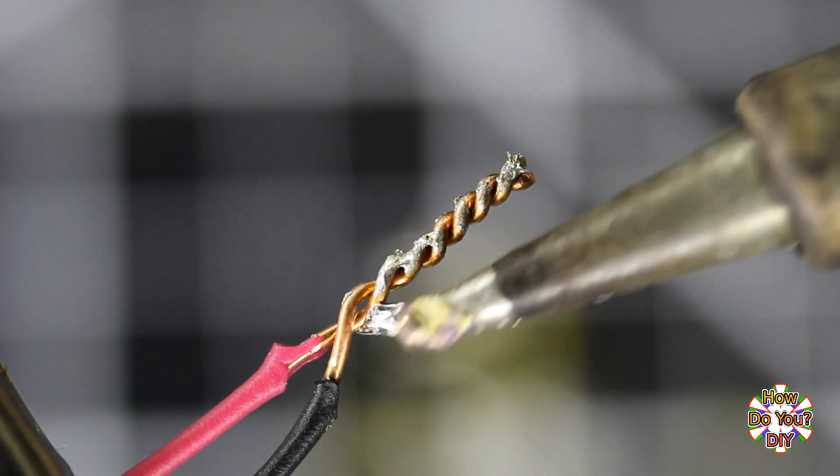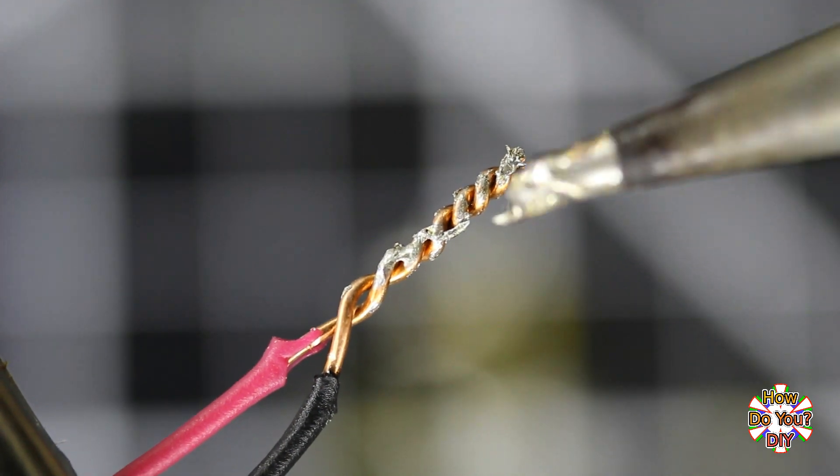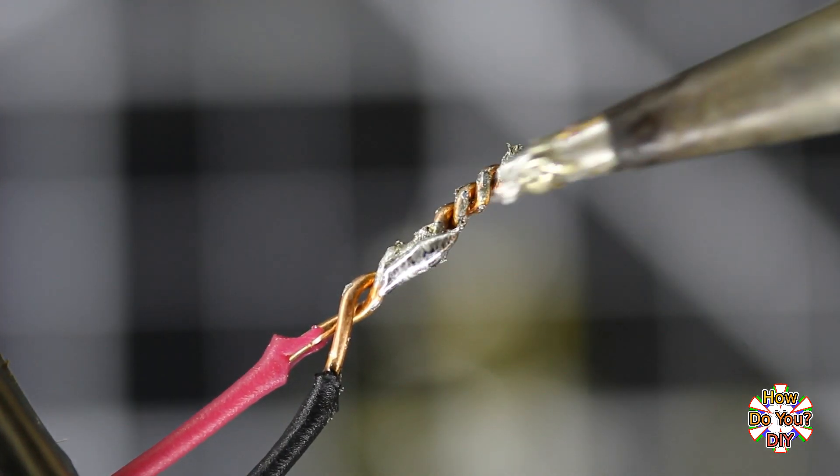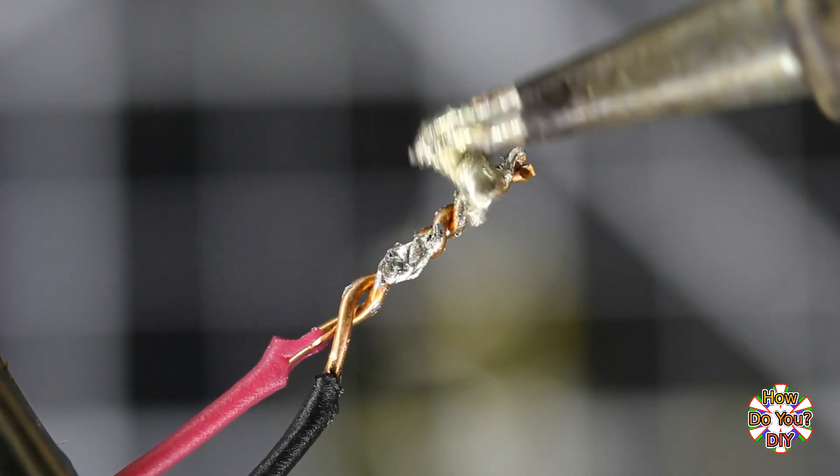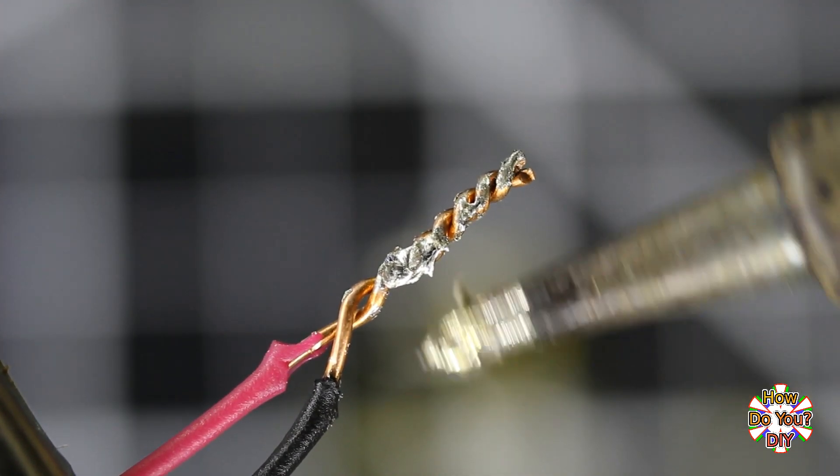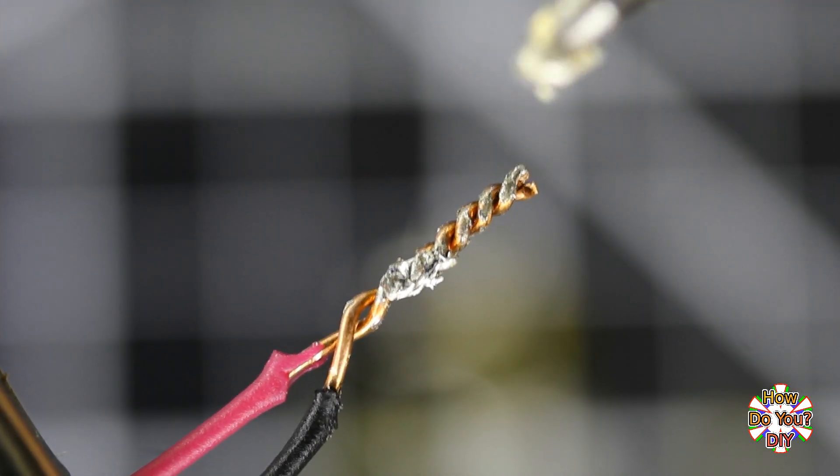As I move the solder around, it looks like it has some kind of skin on it. That skin is the oxide layer of the solder. The oxide layer is a barrier preventing the solder and copper from bonding together.